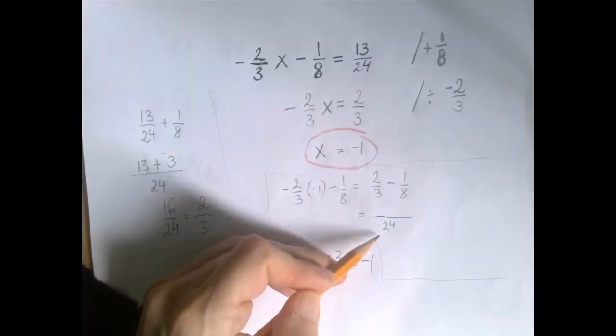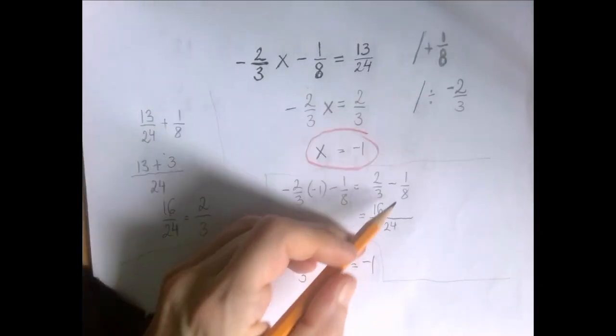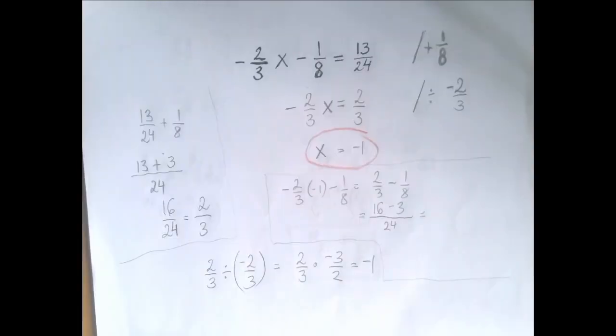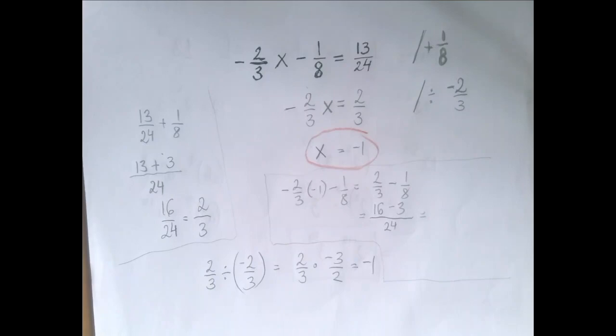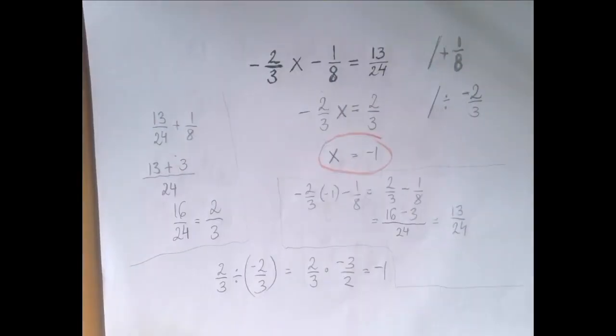The common denominator is 24. 3 to 24 that was a multiplication by 8. 2 times 8 is 16. And 8 to 24 that was multiplication by 3. And 1 times 3 is 3. So we have 16 minus 3 in the numerator and 24 in the denominator. So the left hand side is 13 over 24. Well that is the right hand side as well. So our solution x equals negative 1 is correct.